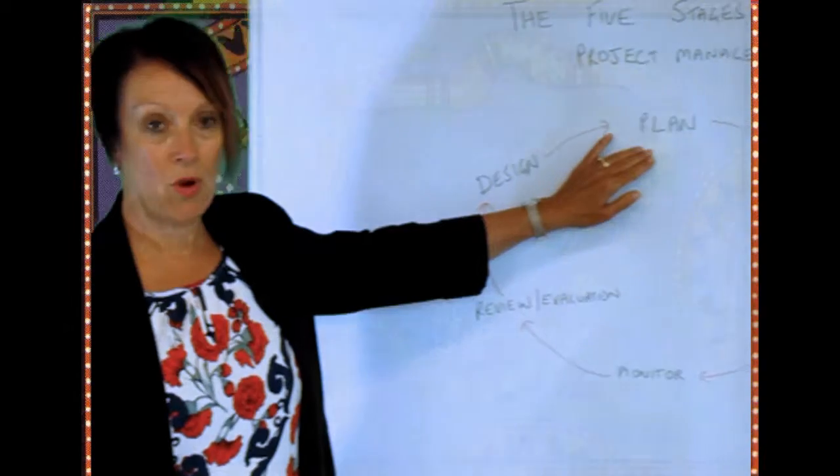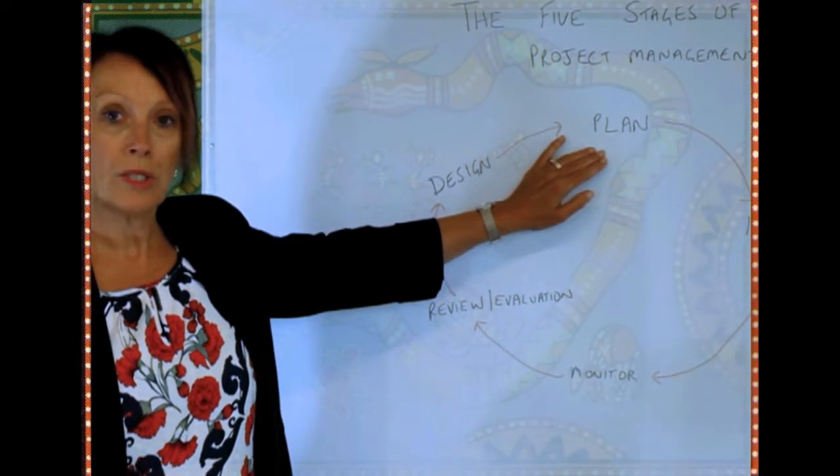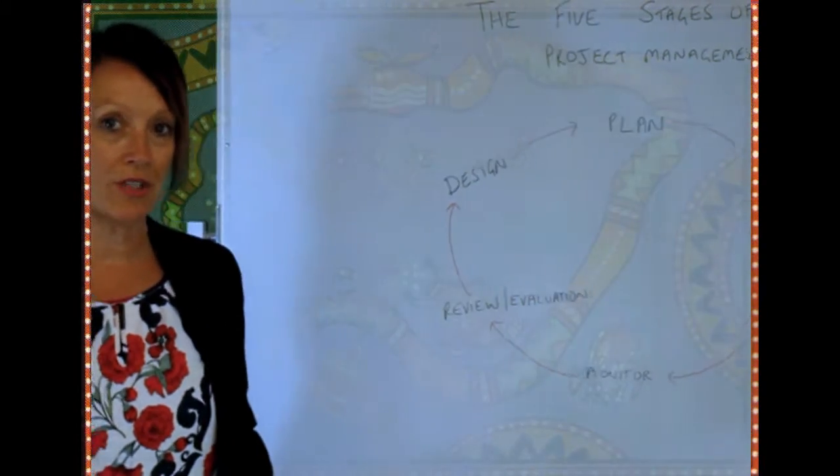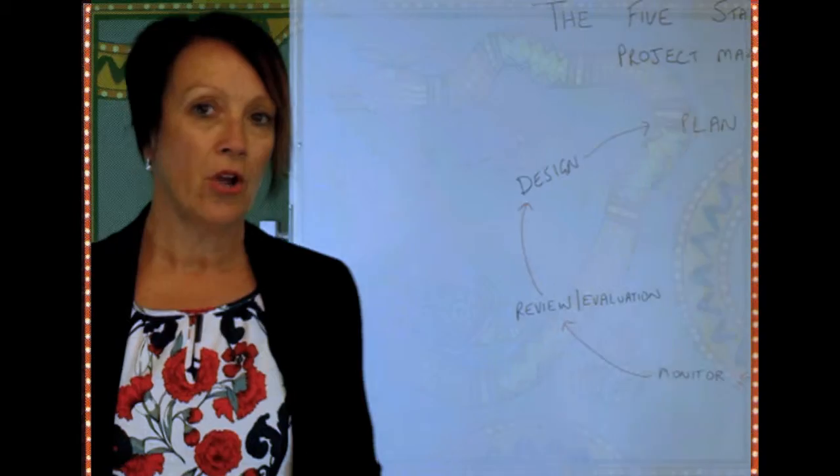The second stage gets into a bit more detail — that's our planning stage. This requires you to think about specifically what activities are going to happen, who's responsible for carrying out those activities, what's the timing, and what are the expected outcomes. That's a fairly detailed document, but it's a very important document because it will help guide you through the implementation phase.